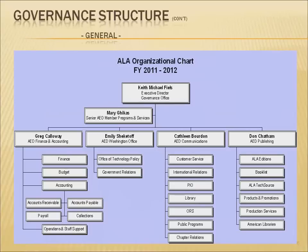The budget structure in many ways reflects this complexity. Each year we establish an operating fund for the organization, basically broken out into three groups. There's the general fund that supports the overall general work of the organization, the publishing program, the conference program, the members program, and the work of the various offices that serve the entire organization. But each of the divisions and each of the roundtables also establishes an annual operating fund.